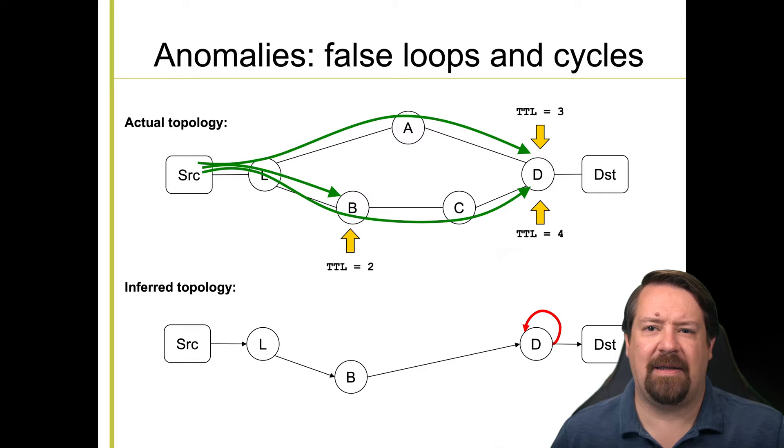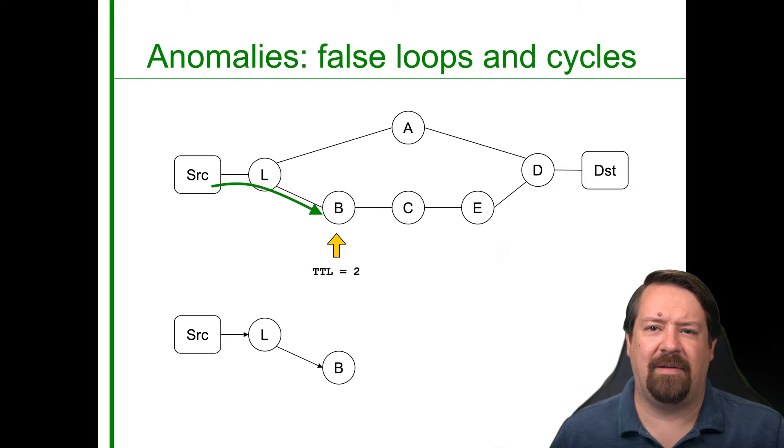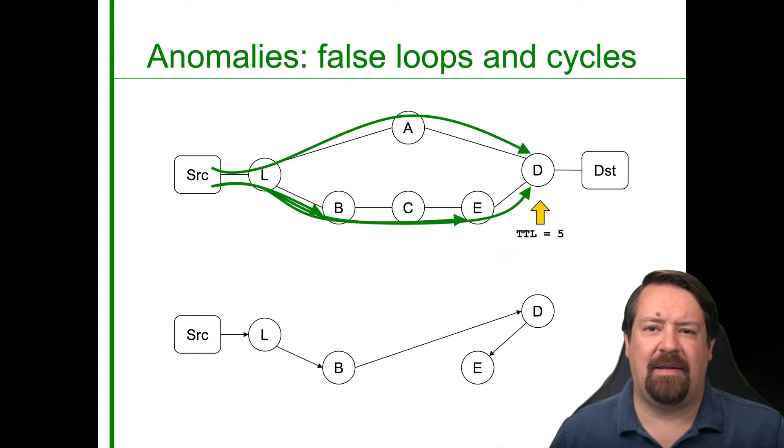Now we've added another router in the longer leg of the load balance path. And so in this scenario, we have TTL2 revealing B, TTL3 revealing D, TTL4 arrives at E, and TTL5 takes the same longer path and arrives at D. So now we have a routing loop including D and E. So our revealed path is L, B, D, E, D, and then the destination.